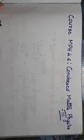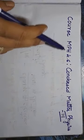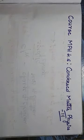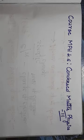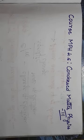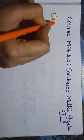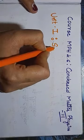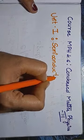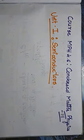Today we are going to discuss the entire paper course MPH 4.6, Condensed Matter Physics 3, which is a fourth semester MSc paper. In this paper there are four units: unit one is Semiconductors, unit two is Transport in Semiconductors, unit three is Semiconductor Devices, and unit four is Low Dimensional Semiconductor Structures. All four units are based on the study of semiconductors. The first unit we are going to study is Unit 1: Semiconductors.